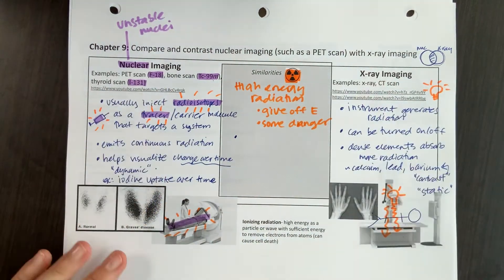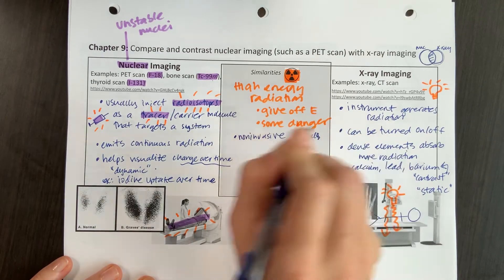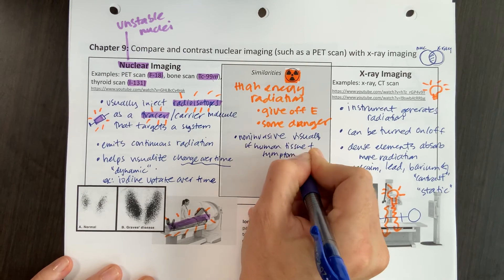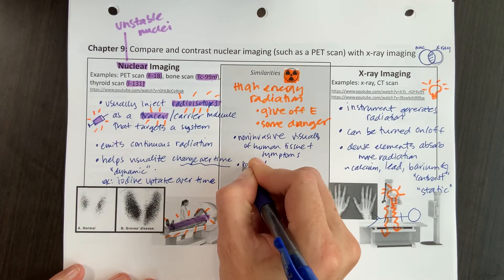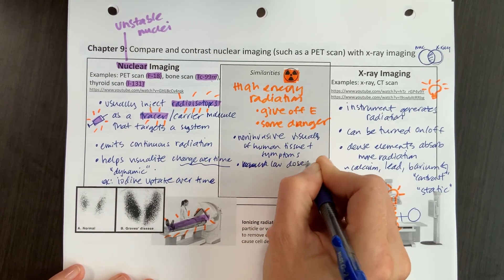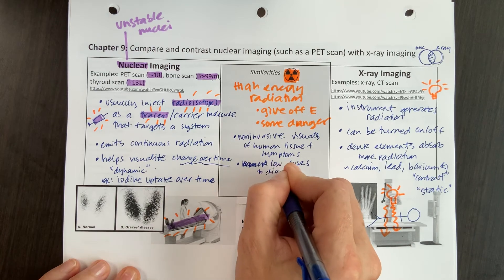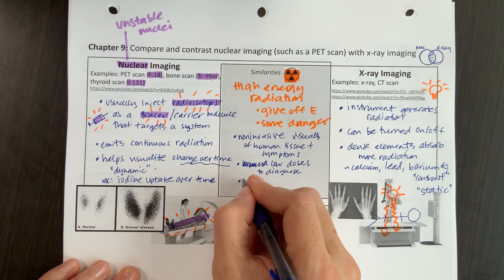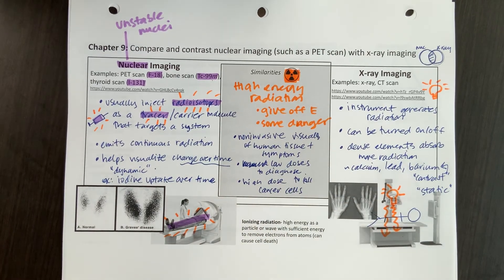Other things they have in common: both are imaging, so they are relatively non-invasive compared to surgery — they give non-invasive visuals of human tissue and symptoms. Both use low doses, whether of isotopes or x-rays, which keeps them safe for diagnosis. If you want to kill thyroid cancer or cancer elsewhere in your body, you could use a high dose to kill cancer cells — high energy always kills cells in high doses, so we can increase the dose if needed.